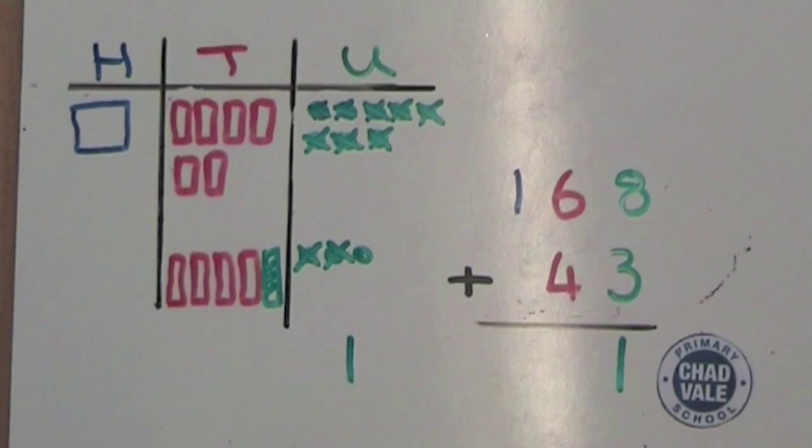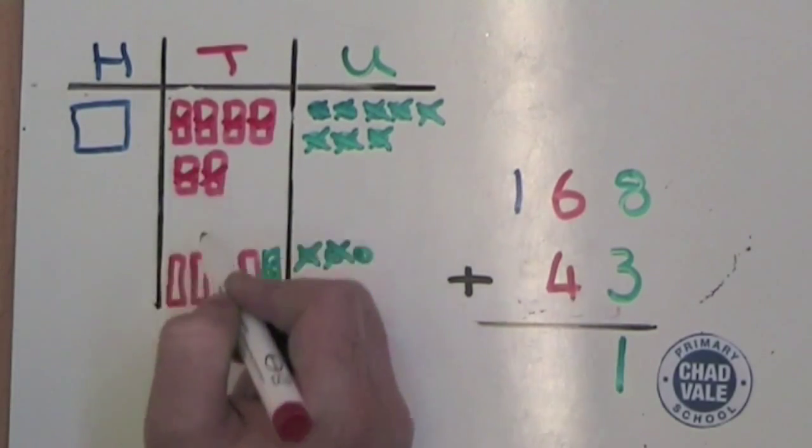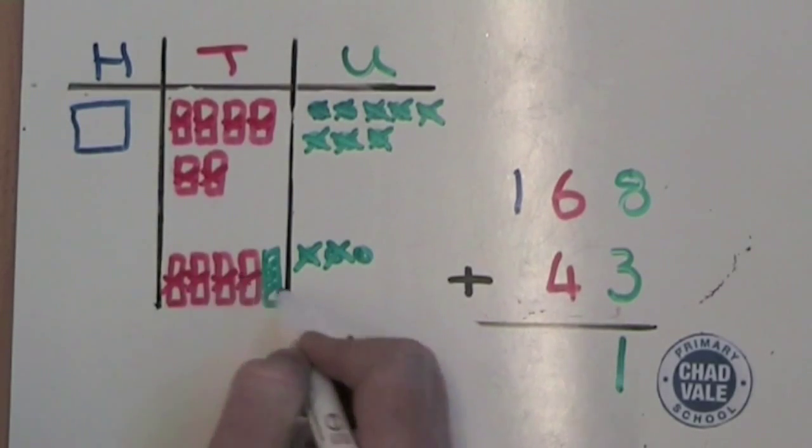Next we need to do 6 tens, add 4 tens. 1, 2, 3, 4, 5, 6, 7, 8, 9, 10.